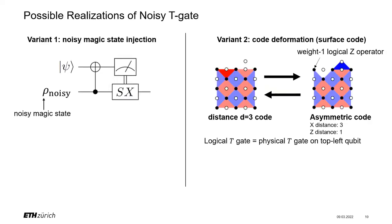Before explaining the quasi-probability decomposition, I want to discuss how we can realize a noisy logical T-gate. We studied two variants in detail. In the first variant, we consider a state preparation circuit that prepares a noisy magic state, which is then inserted with the standard injection gadget into the program. Because the magic state is noisy, the realized T-gate is also noisy. The second variant is more for surface code setups: using the Kitaev-type surface code, we temporarily shrink the upper boundary to weight one by measuring the correct stabilizers, allowing us to realize the logical T-gate by running a physical T-gate on the top-left qubit, then immediately reverting to the original code.